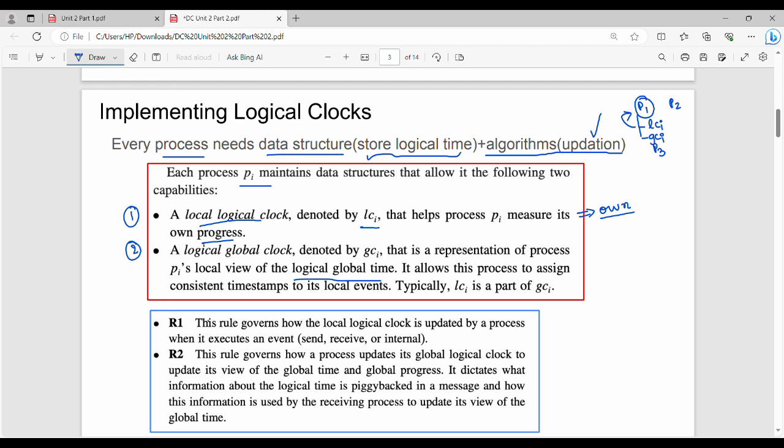Rule number one is own logical time update. This rule governs how the local logical clock is updated by a process when it executes an event - send event, receive event, or internal event. That is how the local logical clock is updated.